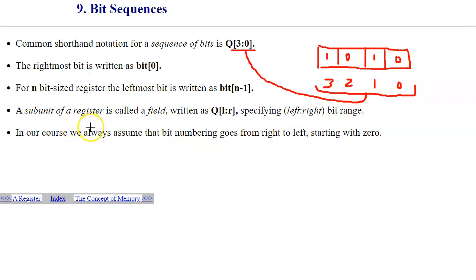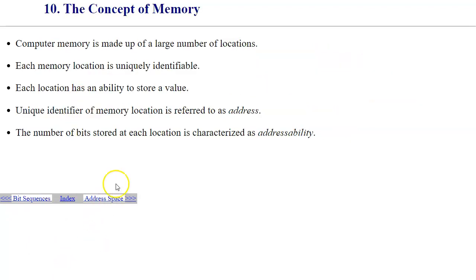This is just a subunit of a register that's called a field, which could be identified by specific range from left to right. The concept of memory could be developed out of the observations and the number of circuitry that we already have.